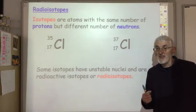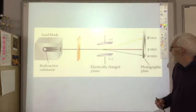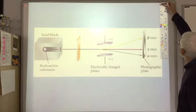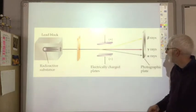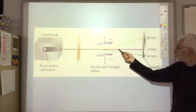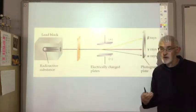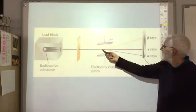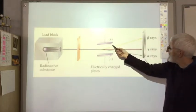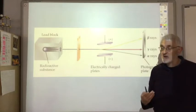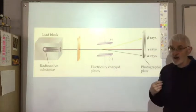We're now going to look at the nature of alpha, beta, and gamma radiation. One interesting experiment is to fire alpha, beta, and gamma rays through an electric field. Gamma rays go straight through the electric field without being deflected, which tells us gamma rays have got no charge. Beta particles, on the other hand, are deflected — pulled towards the positive plate — which means beta particles have a negative charge. Alpha particles are bent towards the negative plate, which means they've got a positive charge.